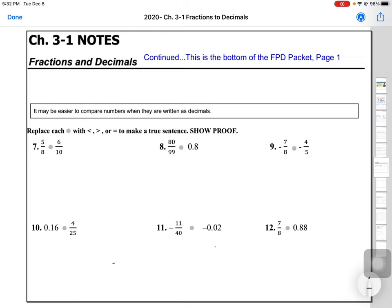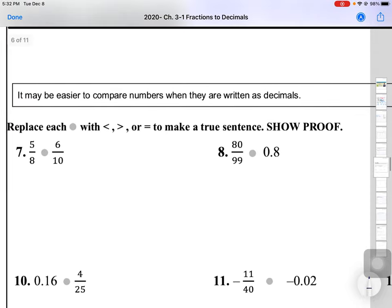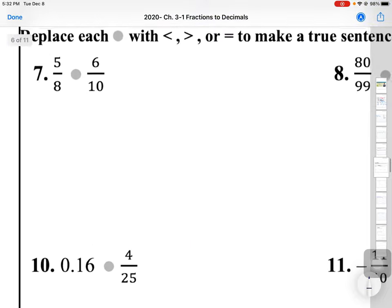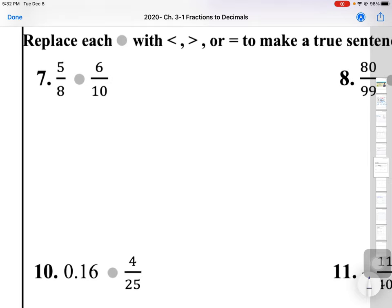When we're talking about fractions and decimals, yesterday we converted all fractions into decimals. We think it's easier to compare numbers when they are written as decimals. We always want the same form or type of number to compare easily. Rather than working this out into getting common denominators, I can simply take my calculator and do 5 divided by 8. So, 5 divided by 8 gives us 0.625.